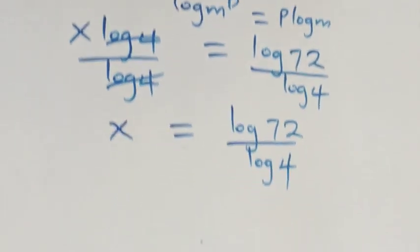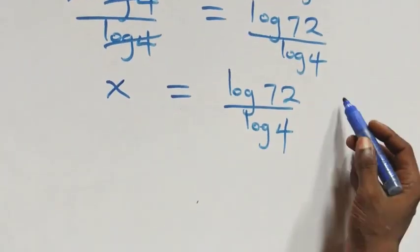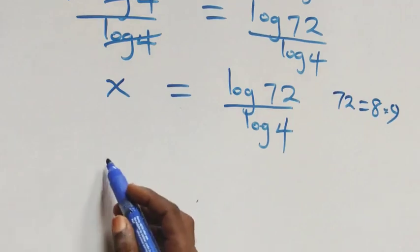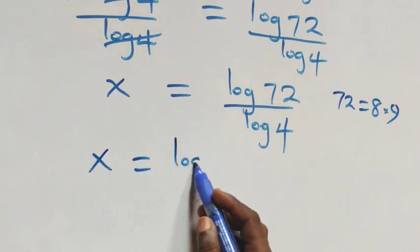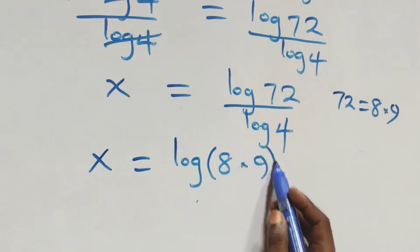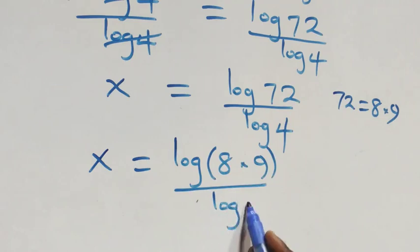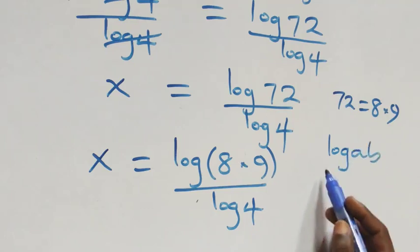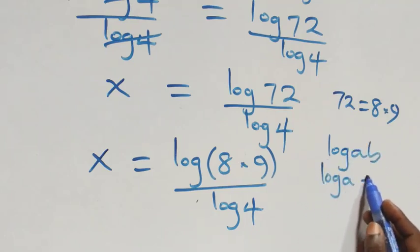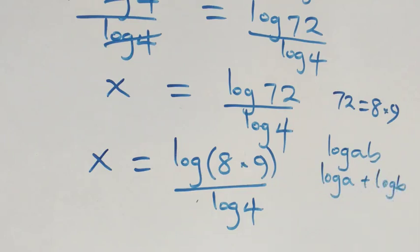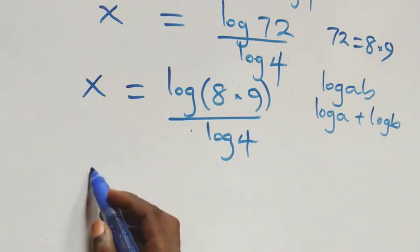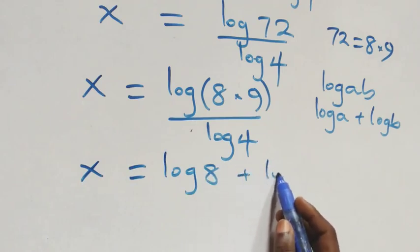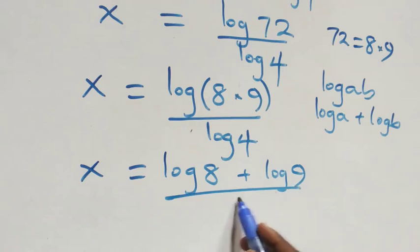Next step, we can write seventy-two as eight times nine. Then what we have becomes x equals to log of eight times nine over log four. This follows the log product rule: log a times b is the same thing as log a plus log b. That is, what we have here becomes x equals to log eight plus log nine, all over log four.